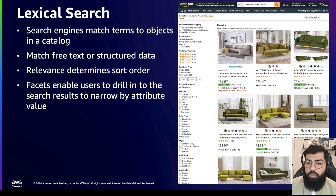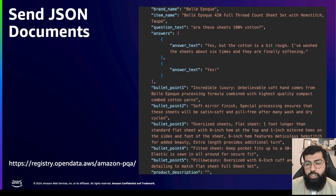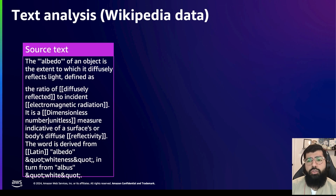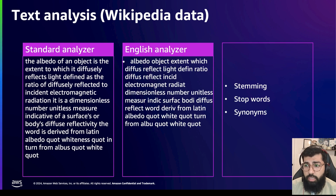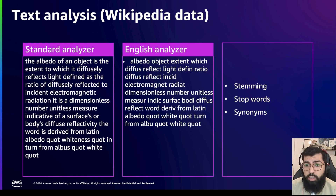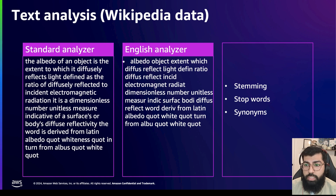A lexical search, or keyword search, looks for exact words or phrases that match the search query. So how does it do this? First we send JSON documents to an OpenSearch index. The documents first go through an analyzer. The standard analyzer removes punctuation and converts everything to lowercase.